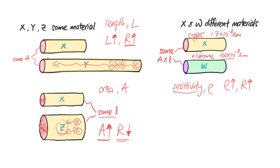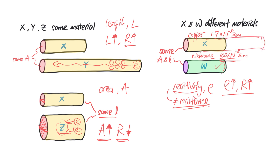The higher the resistivity, the higher the resistance. One important thing to note: high resistivity is not the same as high resistance, so be very mindful of the choice of words. For example, nichrome wire has high resistivity, but if the copper wire is 1,000 times longer, the resistance of that long copper wire will be much higher than the resistance of the nichrome wire — even though the resistivity of nichrome is much higher than copper. So it depends on other factors like length and area.